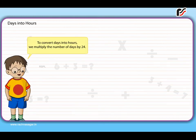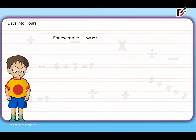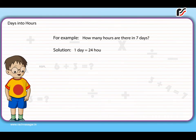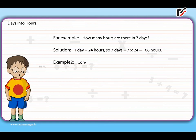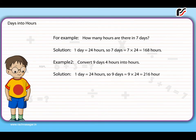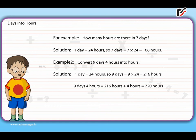Days into hours: To convert days into hours, we multiply the number of days by 24. Example 1: How many hours are there in 7 days? Solution: 1 day = 24 hours, so 7 days = 7 × 24 = 168 hours. Example 2: Convert 9 days 4 hours into hours. Solution: 9 days = 9 × 24 = 216 hours, and 9 days 4 hours = 216 + 4 = 220 hours.